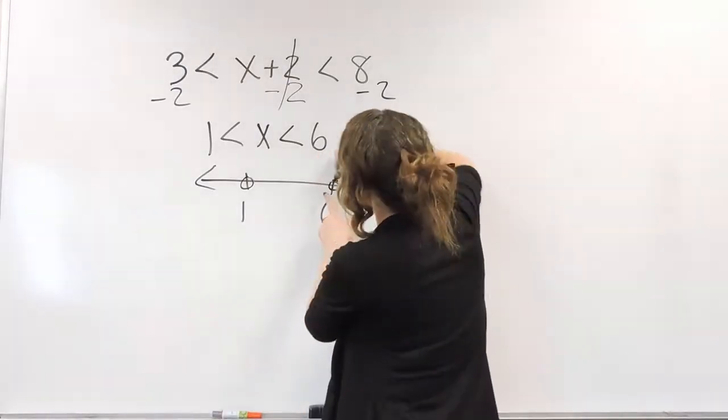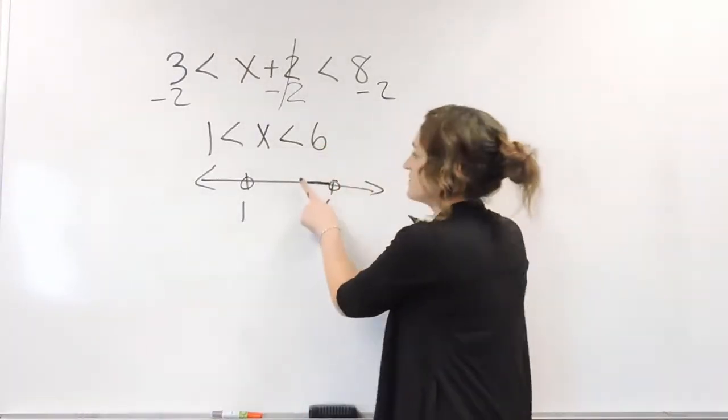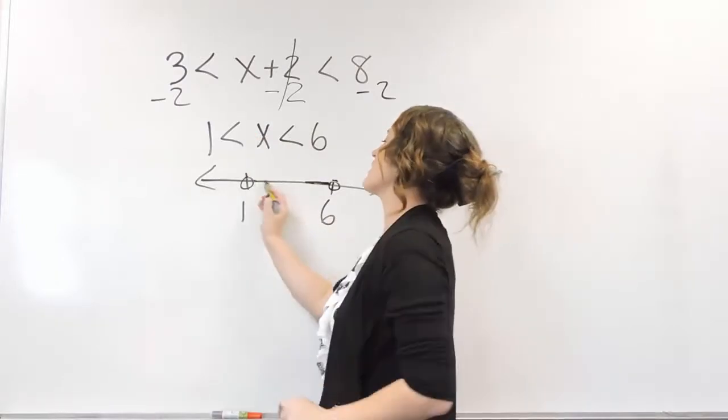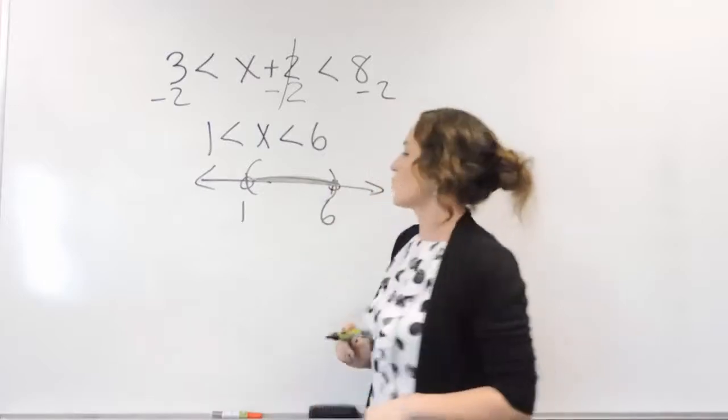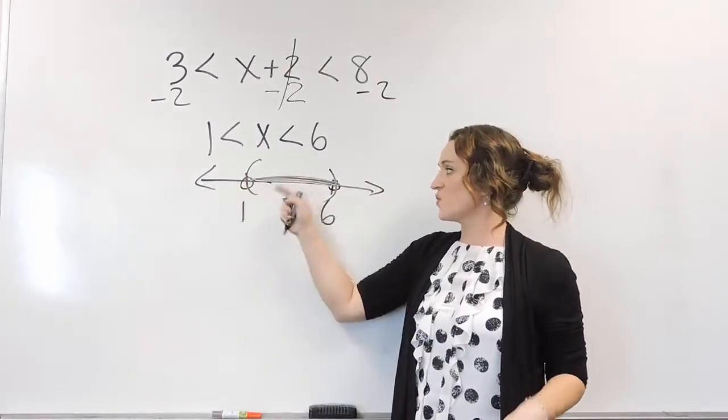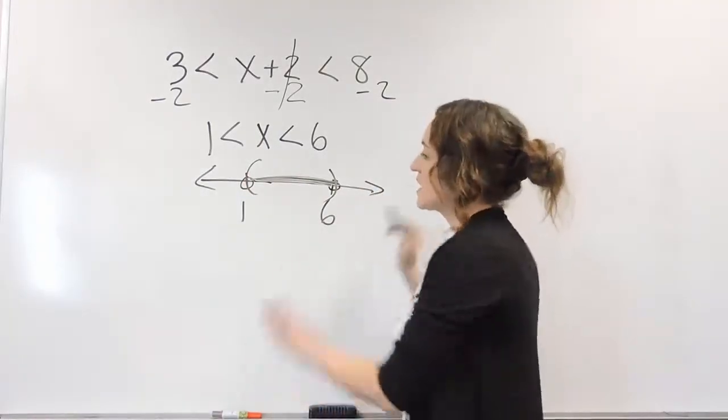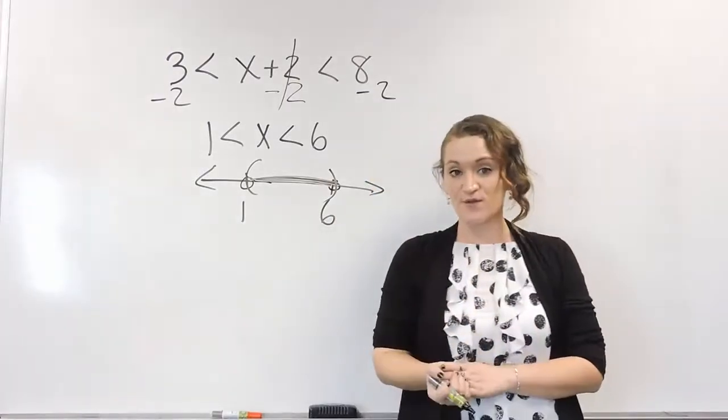So x is less than 6, so to the left of 6, but it's greater than 1. So we are shading between this area right over here. So greater than the 1, but less than the 6. So this is what the solution would look like for this one.